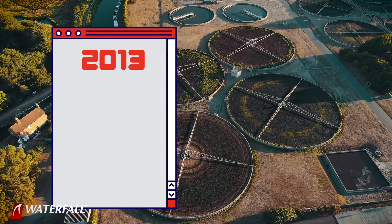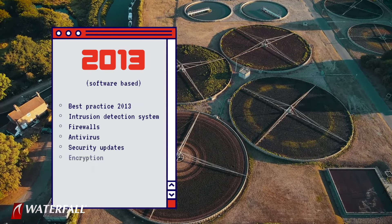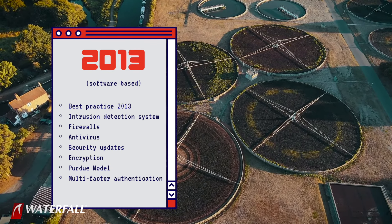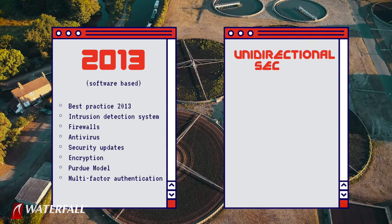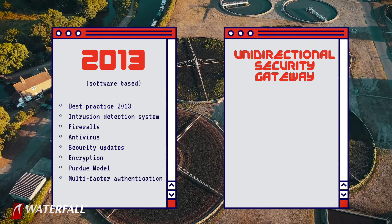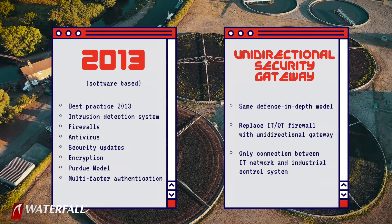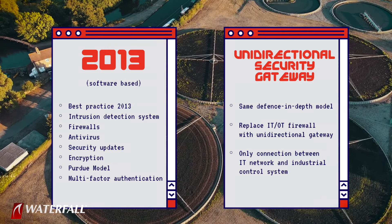One, a 2013 vintage security program with a lot of software protections. All of the best practice that was advised in 2013, no matter how difficult or expensive those best practices might have been. The second security posture is that same posture with one addition, a unidirectional gateway deployed at the IT/OT interface, replacing the IT/OT firewall.